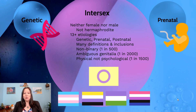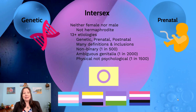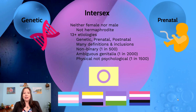Intersex refers to someone who does not physiologically fall entirely within the categories of being female or male, and this can be a very blurry definition. There are over 13 different possible etiologies, or causes, of an intersex condition. Some of these causes may be genetic, prenatal, or postnatal.